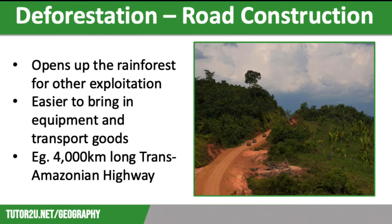Our final cause of deforestation is road building. Many people argue that this is the most destructive cause of deforestation in total, as building roads opens up the rainforest and makes it commercially accessible, which enables further exploitation. By building new roads, it makes it easier to bring in equipment and transport goods found in the rainforest to markets. A good example of this is the 4,000km long Trans-Amazonian Highway, which has opened up many remote areas of the Amazon rainforest to exploitation.